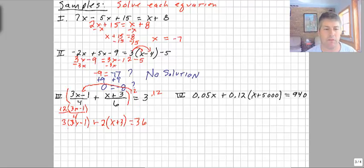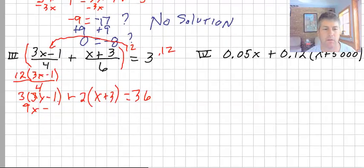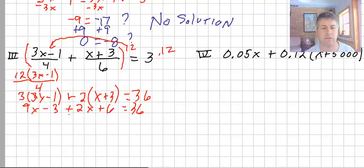So let's finish off this problem. We have 3 times 3x, we have 9x minus 3. I'm distributing 3, and 2 times it, I'm distributing the 2. We get 2x plus 6 equals 36. I'm going to combine my x's. 9x plus 2x is 7x. The negative 3 plus the 6, we get 7x minus 3 equals 36.